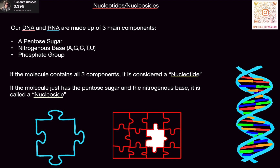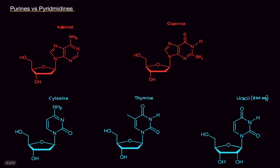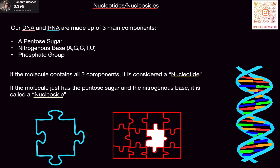What are nucleotides and nucleosides? Our DNA and RNA are made of three main components: a pentose sugar, a nitrogenous base — which you should know as the A's, G's, C's, T's, and U's — and a phosphate group. If the molecule contains all three components, it is considered a nucleotide. If it just has the pentose sugar and the nitrogenous base, then it's called a nucleoside. Basically, if it does not have the phosphate group, it's a nucleoside.